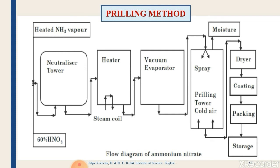Looking at the process diagram: heated ammonia vapors and 60% nitric acid are fed into a neutralizer tower, giving a concentrated ammonium nitrate solution. This is passed through a steam-coil heater and then a vacuum evaporator to reach 95% ammonium nitrate concentration. The concentrated solution is sprayed through nozzles at the top of the prilling tower while cool air enters from the bottom, producing uniform-sized ammonium nitrate prills. These are dried, coated, then taken to the packaging unit for packing and storage. This completes the prilling method for preparation of ammonium nitrate.